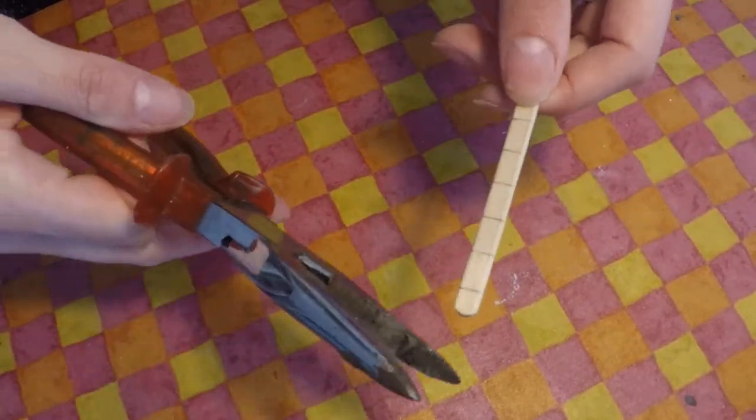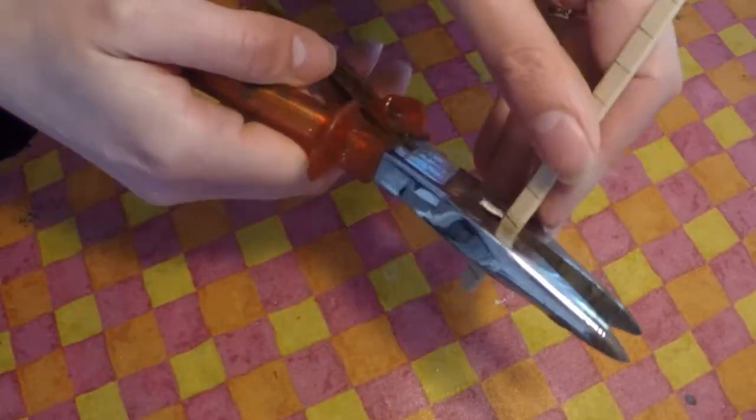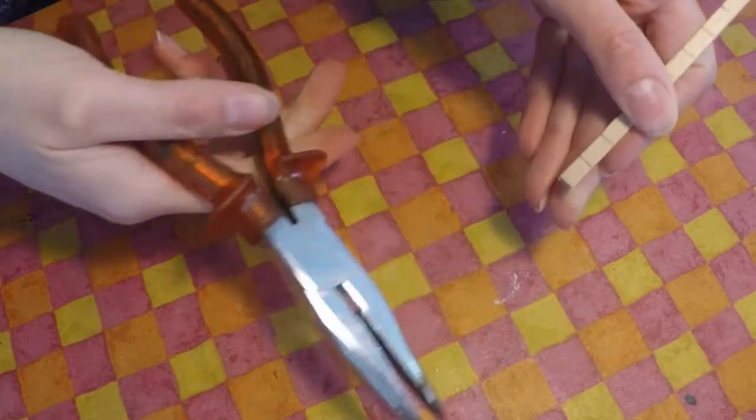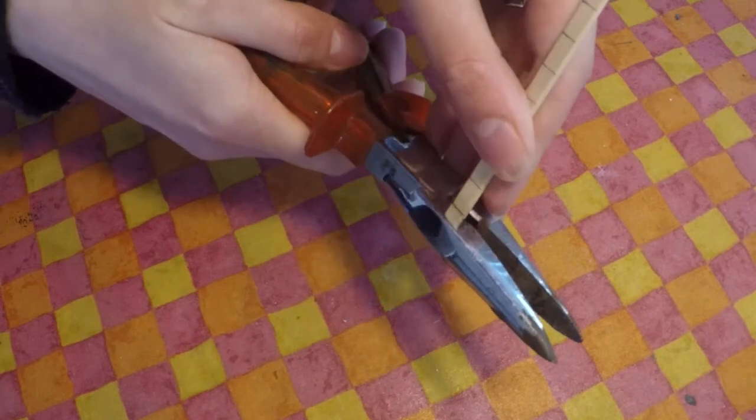When I was done marking the tiles, I cut them with some pliers. You might want to clean your room before you do this, because I lost some pieces that flew off into the abyss that is my crafting room.